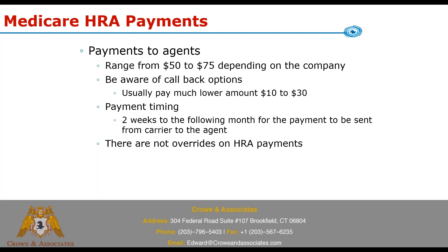Let's go to the payment section. Payments range from $50 to $75 per HRA completed. Be aware of the callback option — if you do the callback option where later on they call a number and talk to a representative, it's usually a much lower amount, around 10 to 30 dollars. Aetna's callback, for example, is $10, while Aetna's regular HRA is $60, so you might as well knock it out right then. Once you complete the HRA, it ranges from two weeks to the following month to get paid. Aetna pays about two weeks after you do the HRA; some companies like United pay the following month. They'll pay you directly from the carrier, just like commissions — it's just a separate listed commission payment that comes in.